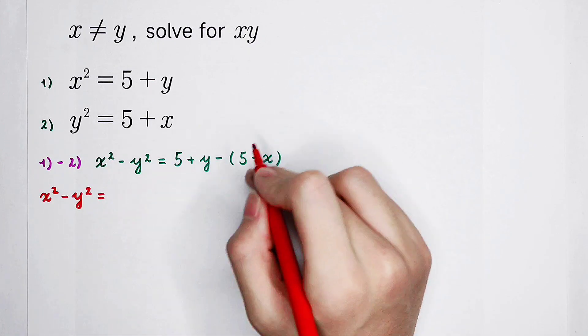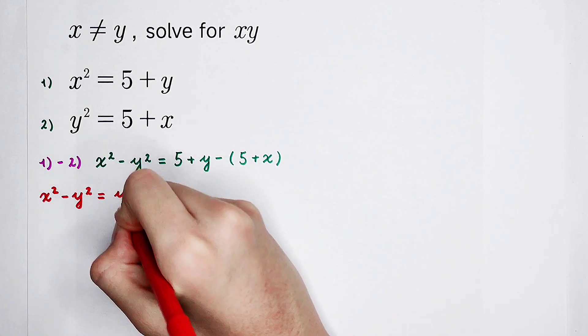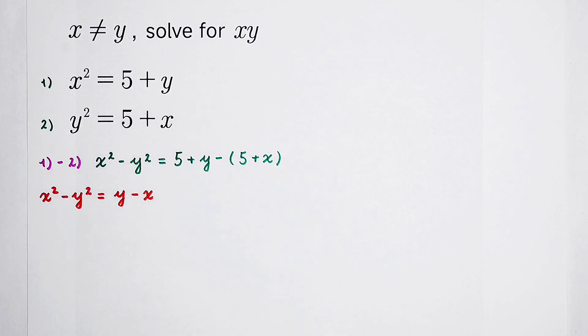Our next step, x squared minus y squared is equal to 5 plus y, then minus 5, minus x. 5 minus 5 cancel, y minus x.